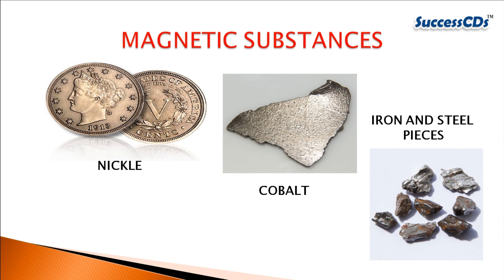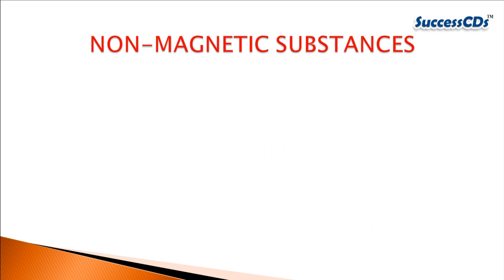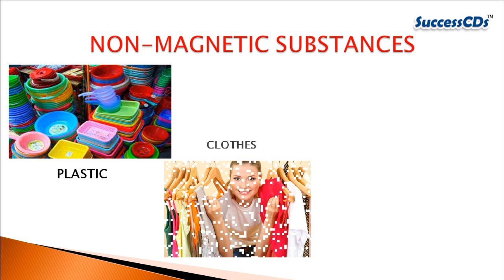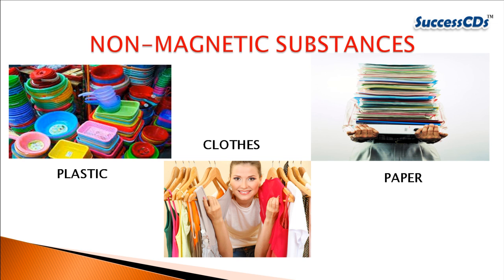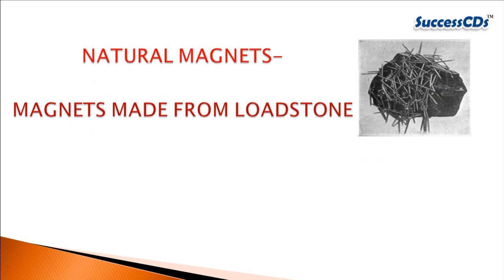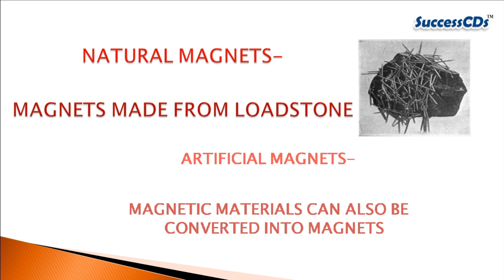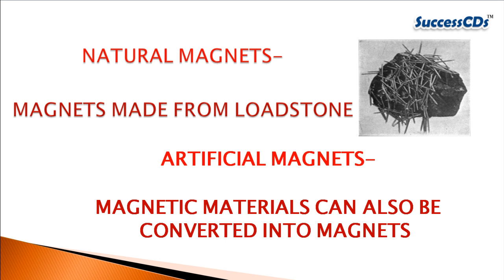These materials — nickel, cobalt, iron, and steel — are referred to as magnetic substances. Those materials like plastic, paper, cloth, etc., which are not affected by a magnet, are called non-magnetic substances.